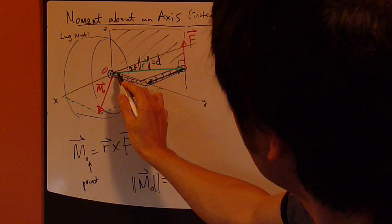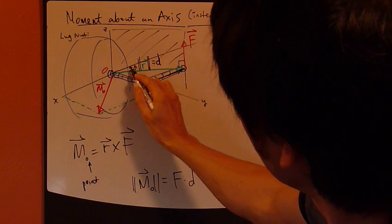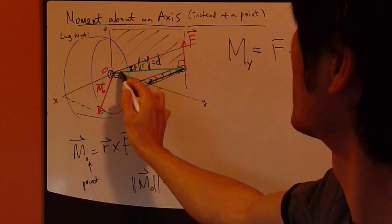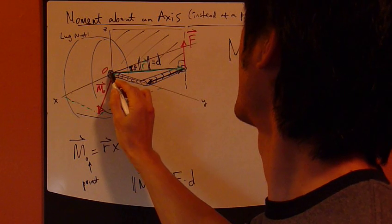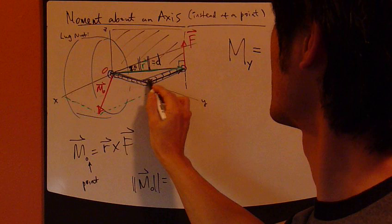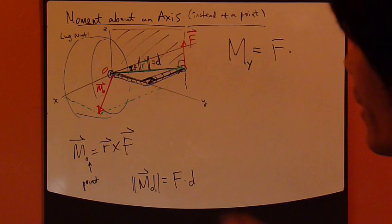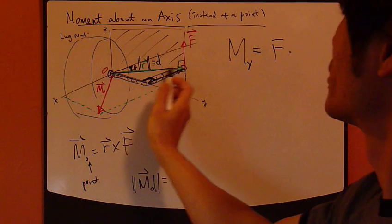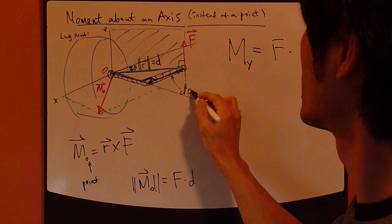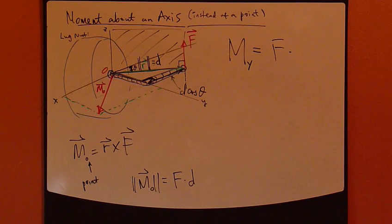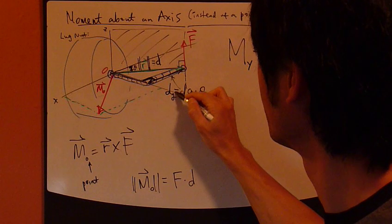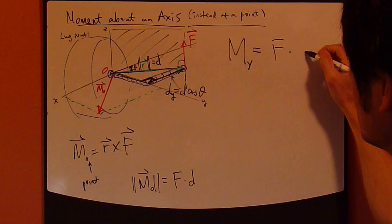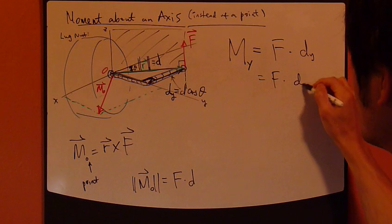So in this case, in this picture right here, this is my distance D, and this D makes an angle theta with the X axis. So if you look at this triangle right here, this is actually a right triangle. So this distance is, well, D becomes the hypotenuse. So this is D cosine theta. Let's call it D_Y, the Y component of D. So D_Y is F times D cosine theta.